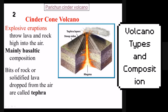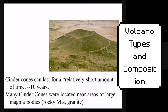Some cinder cones will only erupt for a few years — they're not the biggest, not the longest lasting, and not the most explosive; they tend to be smaller in scale. Cinder cones can only live for about 10 years maximum. They also tend to be associated with other large magma bodies — if you have a stratovolcano nearby, you might have cinder cones associated with it, sometimes a couple hundred kilometers away.